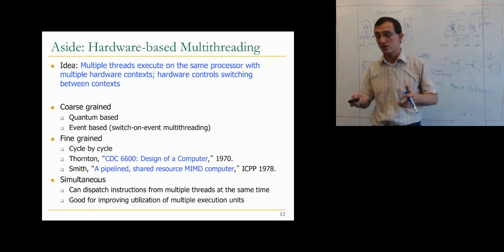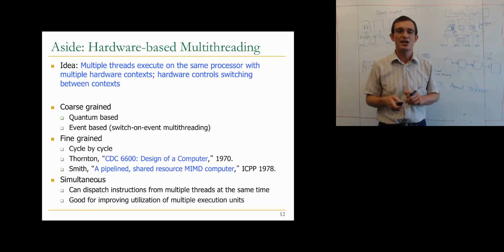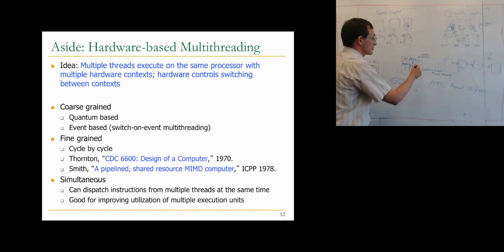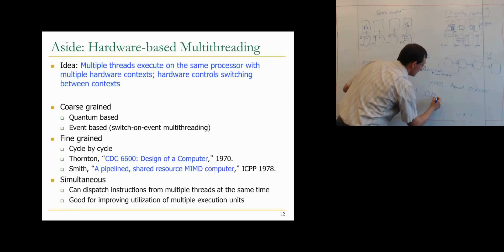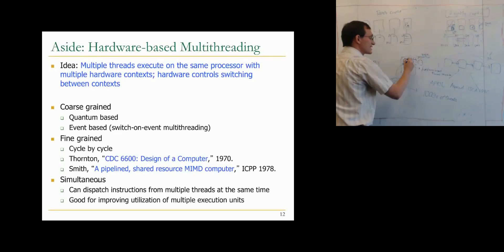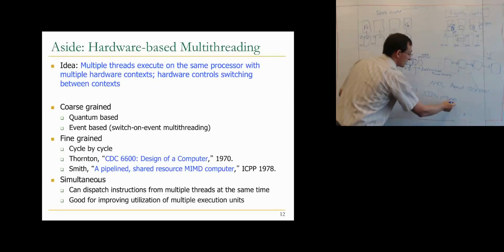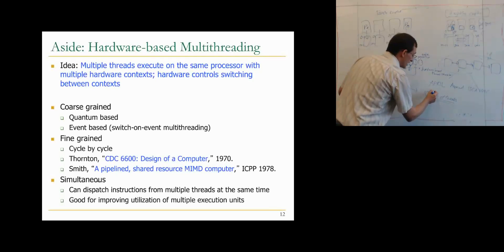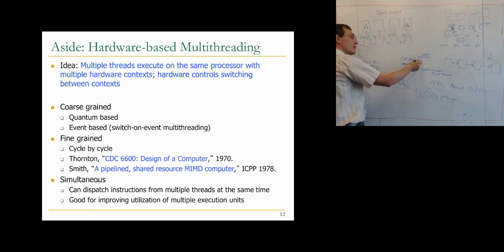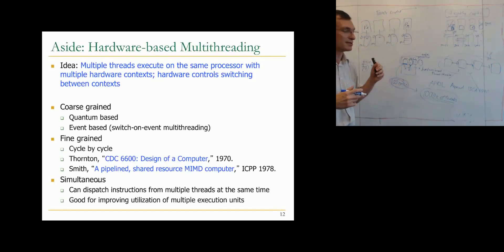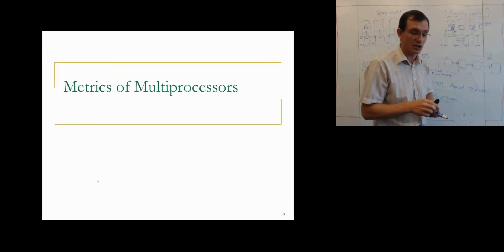This is an exciting area for potential research projects. One interesting project: how do you design a processor that can support thousands of threads very efficiently — getting the benefits of thousand-way multi-threading while having storage for only four contexts? If you're interested in pursuing that, I'd be happy to discuss it.